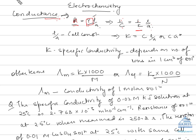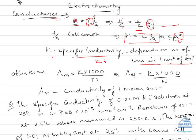L by A is known as the cell constant, where L means the length of the electrodes and A is the area of cross-section of the electrodes. So kappa equals C times L by A, or we can write C times G*, where G* is the cell constant which remains constant regardless of the solution. Kappa is the specific conductivity, which depends on the number of ions in one cubic centimeter of solution. On dilution, the number of ions per cubic centimeter decreases, so specific conductivity decreases.